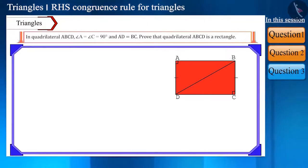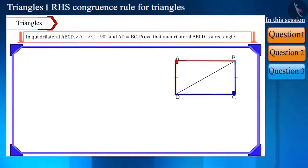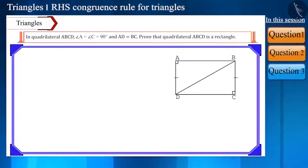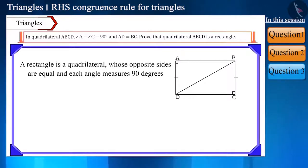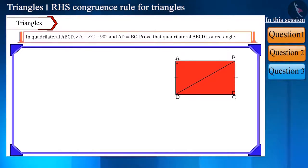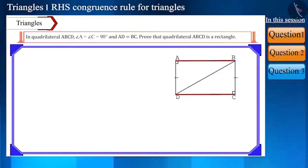In quadrilateral ABCD, the measurement of angle A and angle C is 90 degrees, and side AD is equal to side BC. Prove that quadrilateral ABCD is a rectangle. Friends, what is the definition of a rectangle? A rectangle is a quadrilateral whose opposite sides are equal and each angle measures 90 degrees. It's given that side AD is equal to side BC, and angle A and angle C are right angles. ABCD will be a rectangle if we can also prove that side AB equals side DC and angle B and angle D are right angles. So let's start.